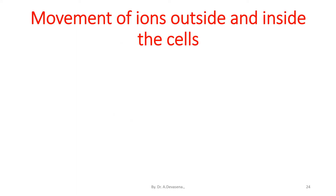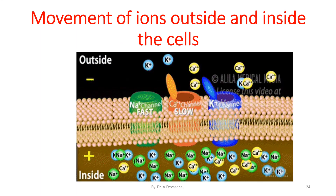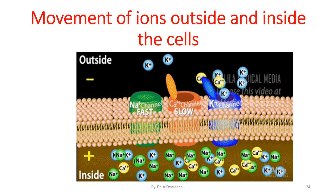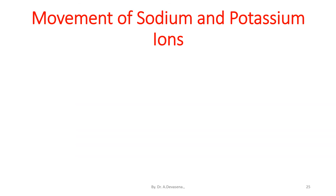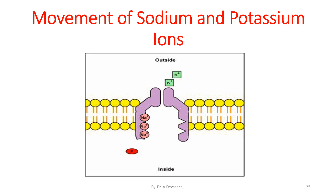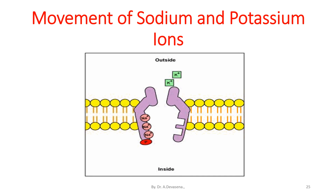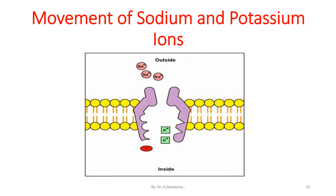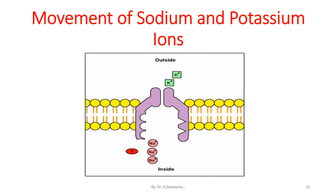Movement of ions outside and inside the cell: here is a representation of the movement of sodium ions Na+ and potassium ions K+. Here is another representation of sodium ions Na+ and potassium ions K+. The potassium ions are moving and the channel closes slowly, and once again the channel opens and the process starts.